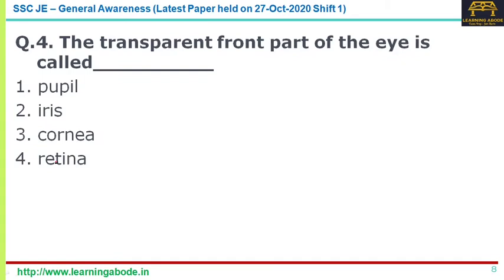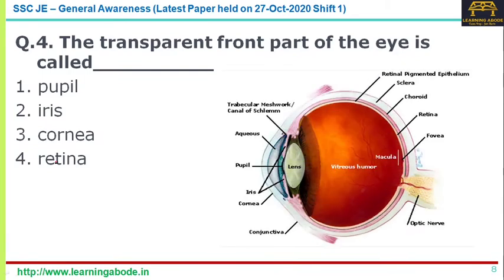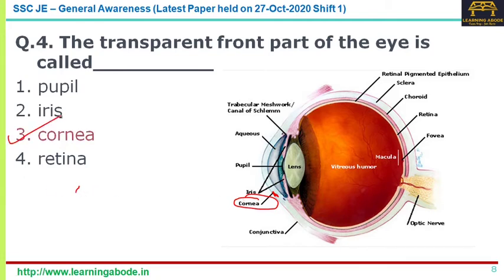Question number four: the transparent front part of the eye is called the cornea. That is answer option three for question number four.